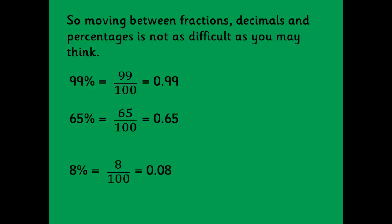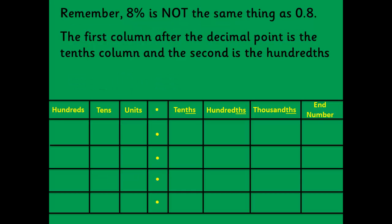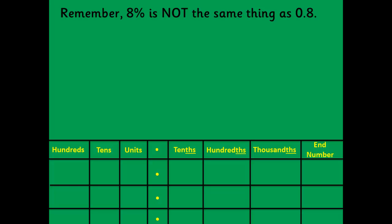8% equals 8 one hundredths which equals 0.08. Now be very careful about this last one. Remember 8% is not the same thing as 0.8. The first column after the decimal point is the tenths column and the second is the hundredths. 8% equals 8 hundredths, so the 8 goes here. Therefore 8% equals 0.08.